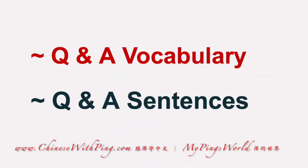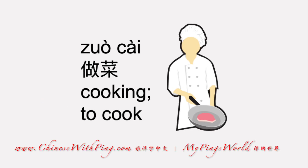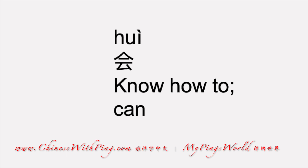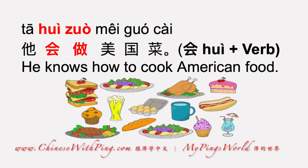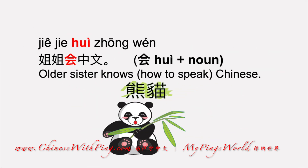Q&A vocabulary: 做菜 — to cook or cooking. 会 — know how to do something; have the knowledge or skills of doing something. You put 会 before a verb. 做 here means to do, to cook — it is a verb. 姐姐会中文 — the older sister knows how to speak Chinese. So 会 can also be placed before a noun.